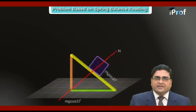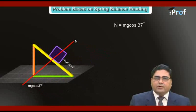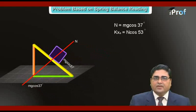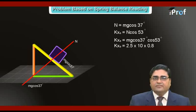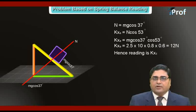And now, N is the normal reaction exerted by block on the wedge also. So, component of N in horizontal direction will be equal to N cos 53. Here N cos 53 will balance K X naught. After solving these equations, we will find reading of spring balance K X naught equal to 12 N.